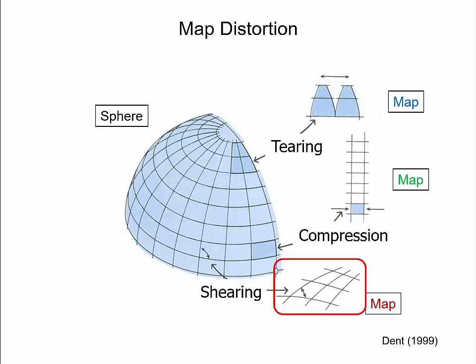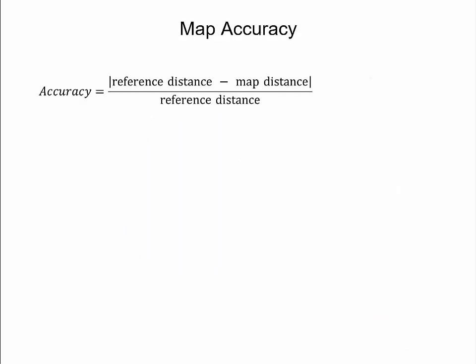The major distortions caused by map projections relate to angles, areas, distances, and directions. Map accuracy is closely related to map distortion, since it helps to quantify the effect of map distortion at a given point and in different directions.